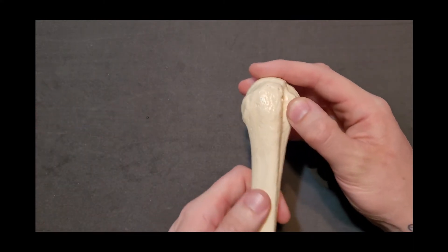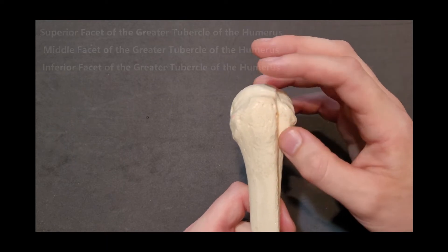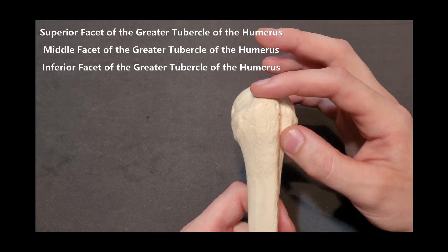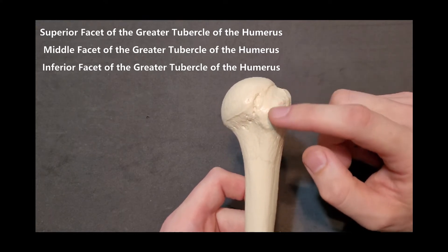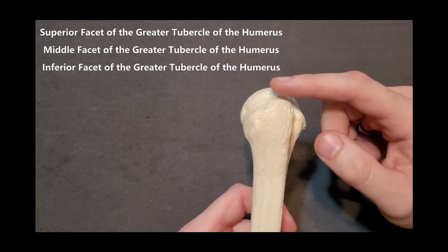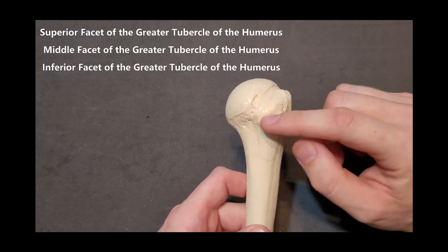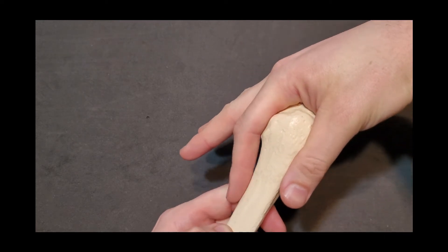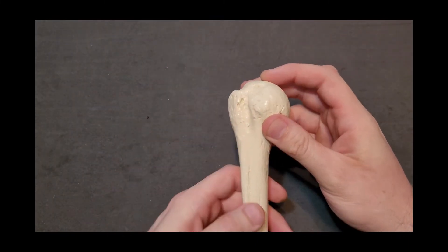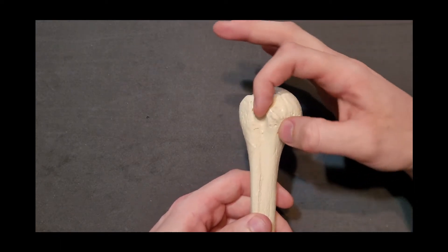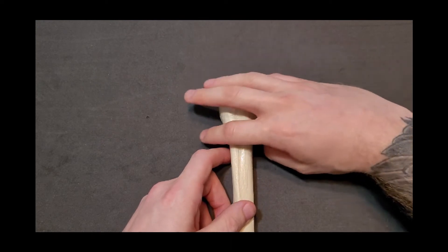Looking at the greater tubercle more closely, there are flat spots called facets. The superior facet is for supraspinatus, the middle facet is for infraspinatus, and the inferior facet is for teres minor. The lesser tubercle, on the anteromedial side, is the insertion for subscapularis. Together with the bicipital groove, these make up the key features of the proximal humerus.